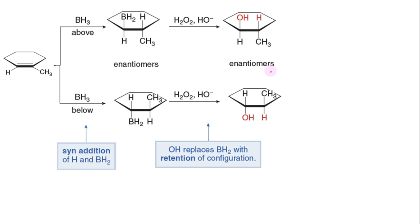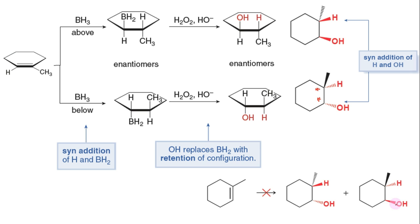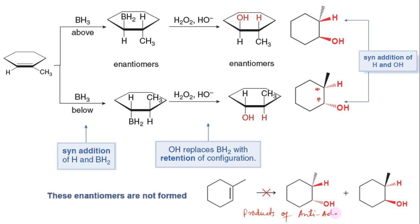Their wedge representation can be shown like this, in which both H and OH are shown above the plane with methyl down the plane, or vice versa. Since two chirality centers are generated, the product will have another pair of enantiomers in which H and OH are trans to each other. These enantiomers are not formed, because these are products of anti-addition, which cannot happen in the case of hydroboration-oxidation.